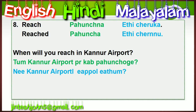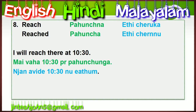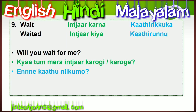The next verb is 'reach.' In Hindi: pahunchna. In Malayalam: aya chernu. Second form 'reached': pahuncha / aya chernu. Question: 'When will you reach Kannur airport?' In Hindi: tum Kannur airport par kab pahunchoge? In Malayalam: ni Kannur airport il eppozhad etum? Answer: 'I will reach there at 10:30.' In Hindi: main wahan sade 10 baje pahunchunga.